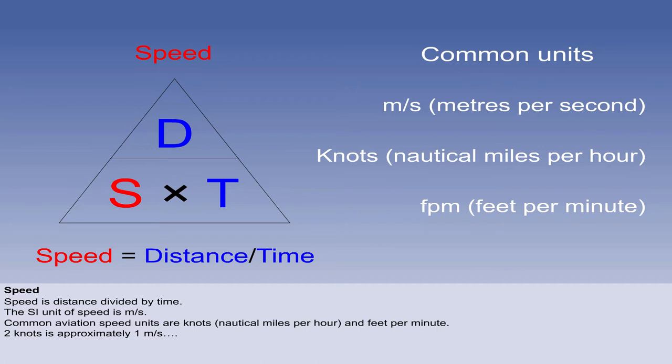In aviation, it is important to be able to convert between these speeds roughly in your head. Two knots is roughly one metre per second. This means, to find the approximate speed in metres per second, you halve the number in knots. For example, an aeroplane flying at 300 knots true airspeed is therefore flying at approximately 150 metres per second.